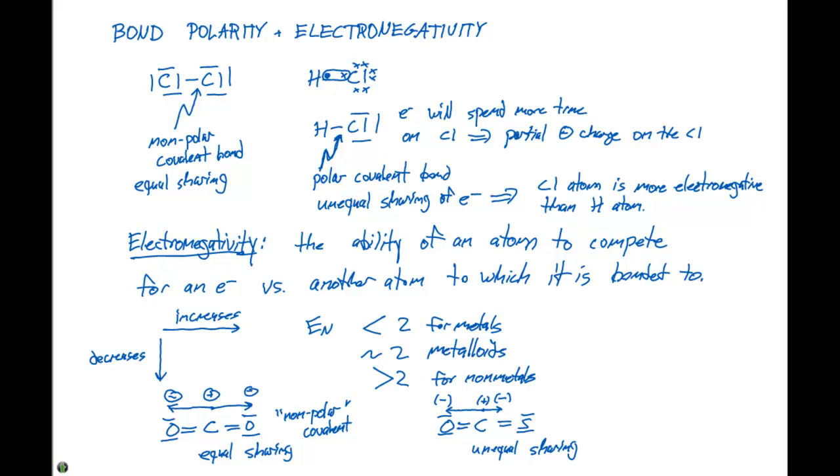And the electronegativity is going to tell us how badly an atom wants a particular electron. And as a consequence, if we have a more electronegative atom, the electrons are going to reside on that atom more in this entire system for the molecule. So here we have an unequal sharing, and the molecule over here on the right, we can say is a polar covalent molecule.